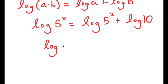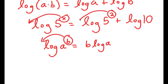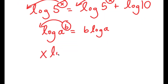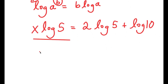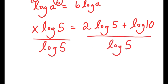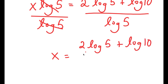Now, if I have something in the form log a to the power of b, I can move the exponent b to the front, so this equals b times log a. So log 5 to the power of x becomes x times log 5, and log 5 to the power of 2 becomes 2 times log 5. I get x times log of 5 is equal to 2 times log of 5 plus log 10. Now I'm going to divide both sides by log 5, these cancel out, and I get x is equal to 2 times log 5 plus log 10, all over log 5.